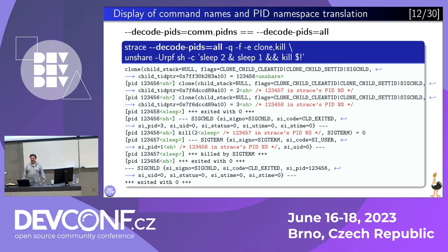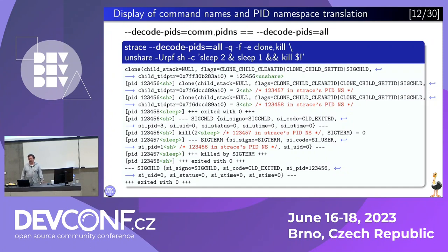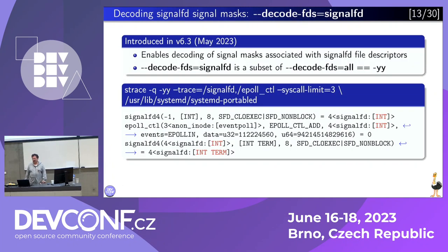In this example I use the option --decode-pids=all because it's more handy. And maybe someday we'll have a short alias, --YY. I don't really know why we don't yet have this alias. It reminds me of -ii, which corresponds to decoding file descriptor information — which is exactly what I'll be talking about now.